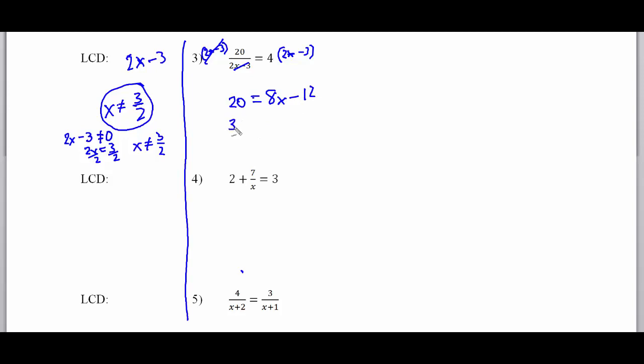And then we're going to divide everything by 8. So, if I do that, x is going to be equal to 4. Now, x is equal to 4. It does not violate with the danger number over there, so the answer is right. I could also plug it back into my original equation over here. So, I could have 20 over 8 minus 3 equals 4. So, 20 divided by 5 is 4. So, that works out fine.